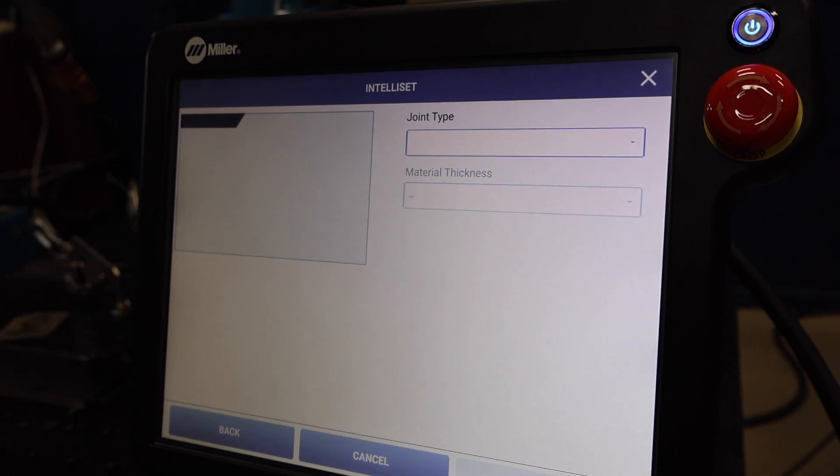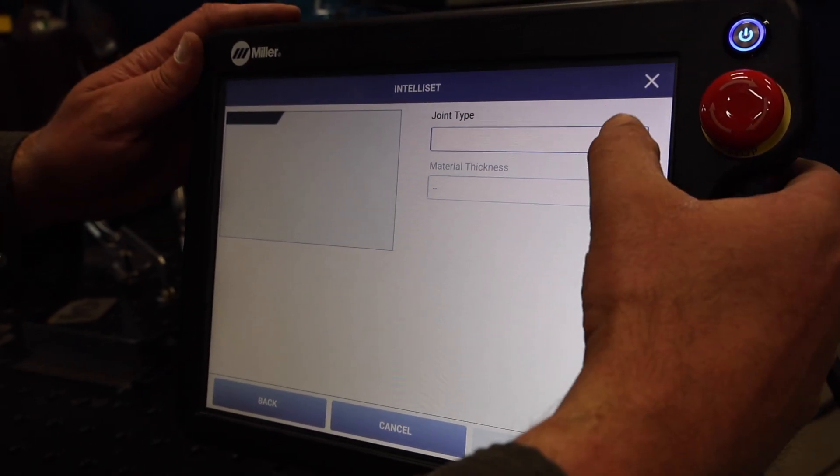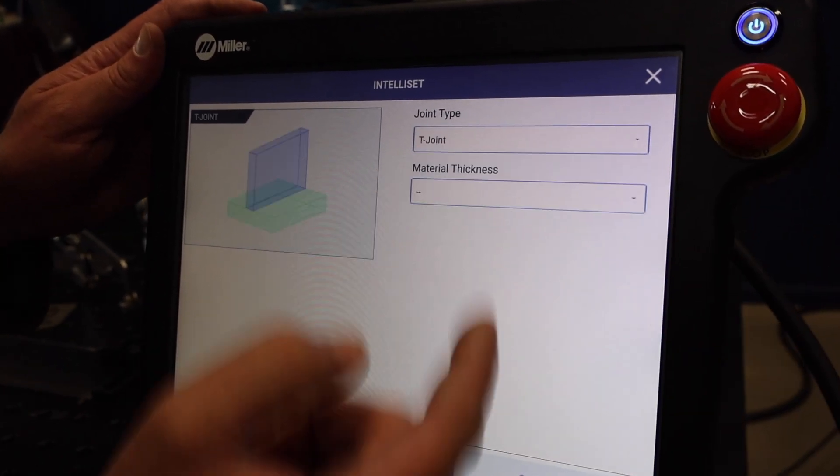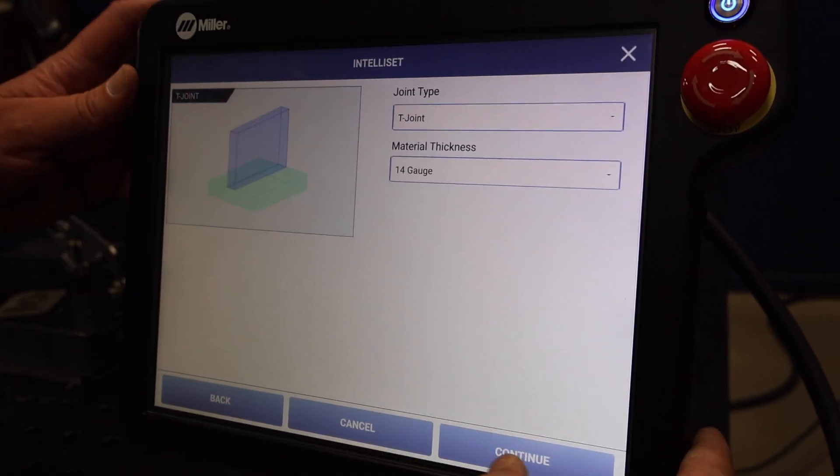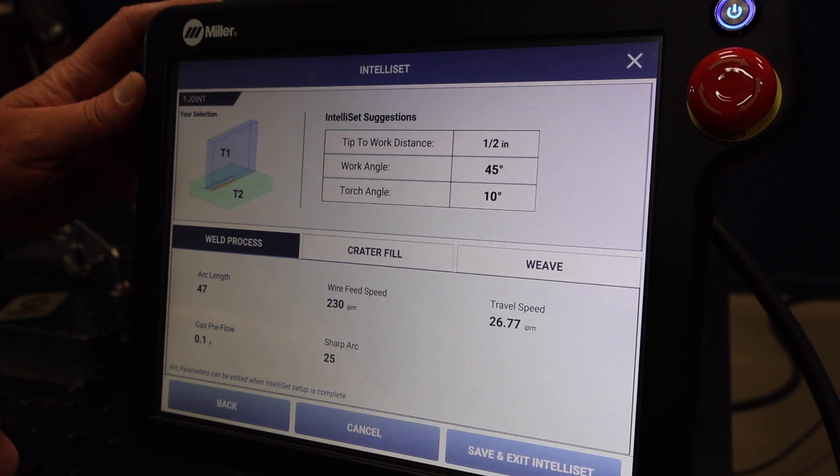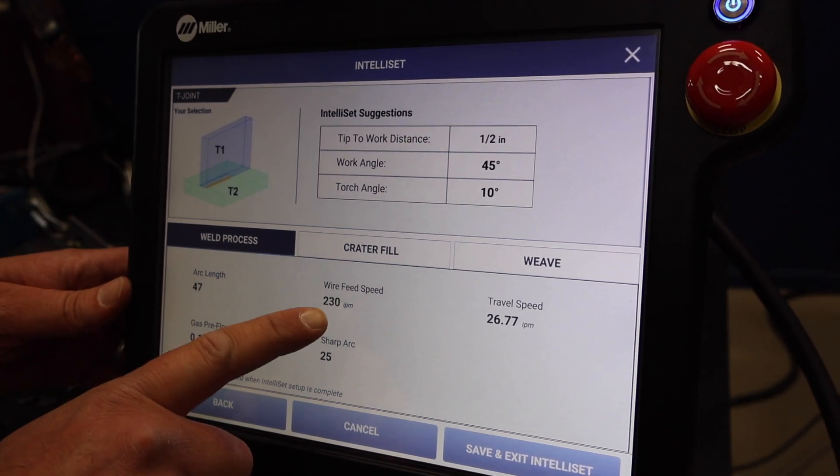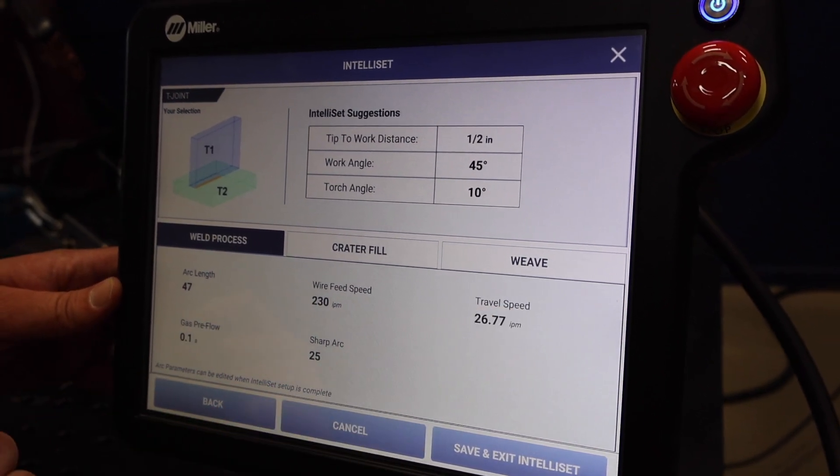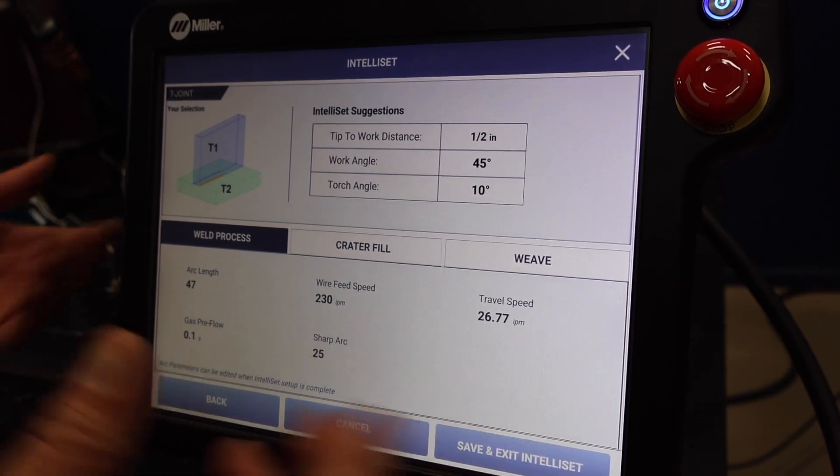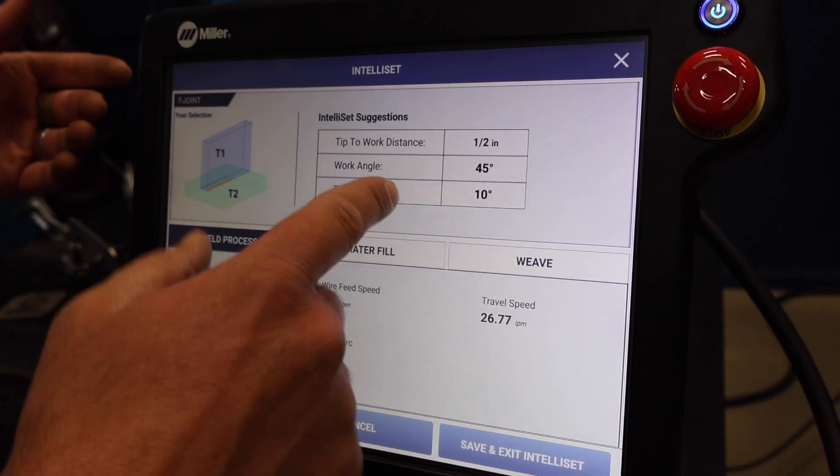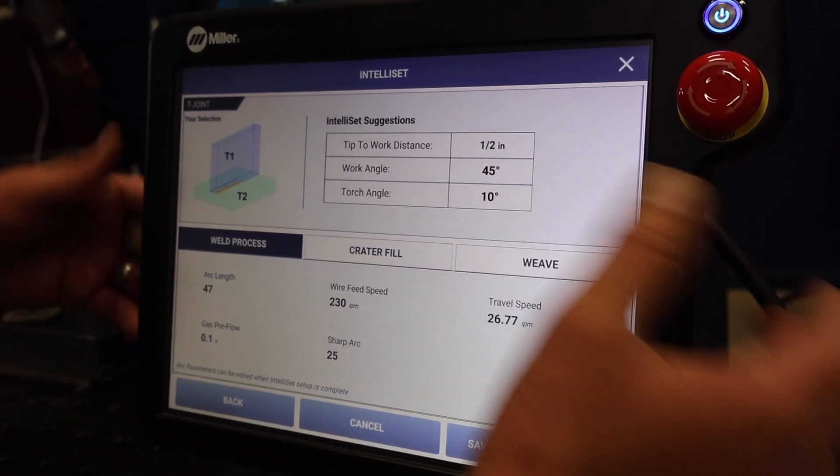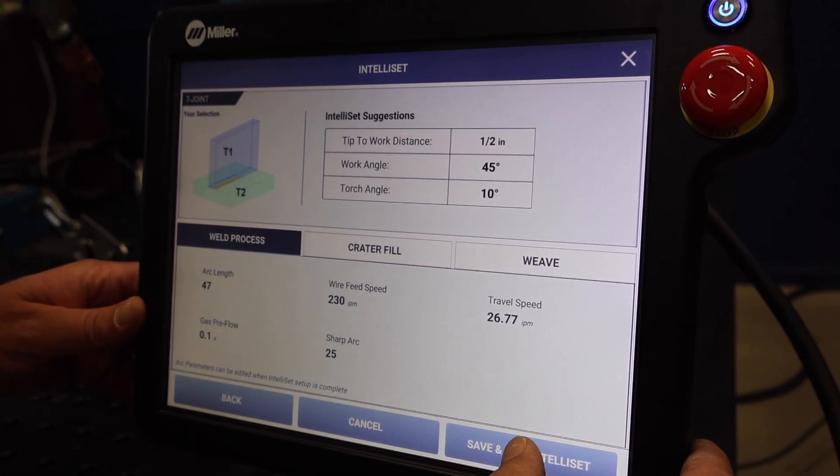IntelliSet is like auto set on the other Miller welders. We're going to do a T-joint, material thickness 14-gauge, hit continue. It gives us arc length, wire feed speed, travel speed, gas flow. It sets our sharp arc for us, gives our contact tip to work distance, our work angle, and our torch angle pretty easy. We'll save and exit. That's all our settings right there.